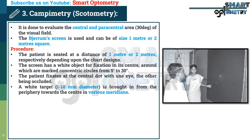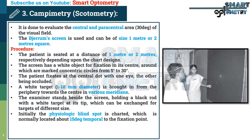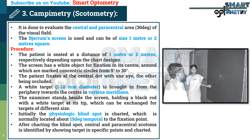A white target of 1 to 10 mm diameter is brought in from the periphery towards the center in various meridians. The examiner stands beside the screen, holding a black rod with a white target at its tip, which can be exchanged for targets of different sizes. Initially, the physiologic blind spot is charted, which is normally located about 15 degrees temporal to the fixation point. After charting the blind spot, central and paracentral scotoma is identified by showing the target at specific points and charted.